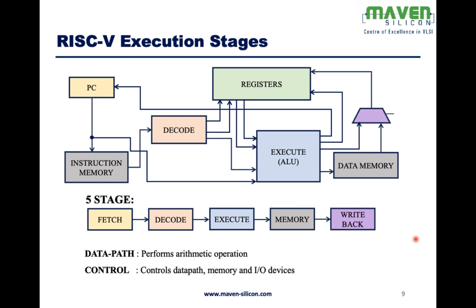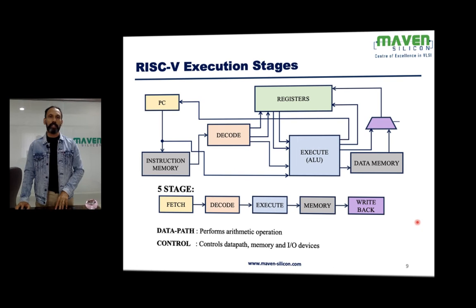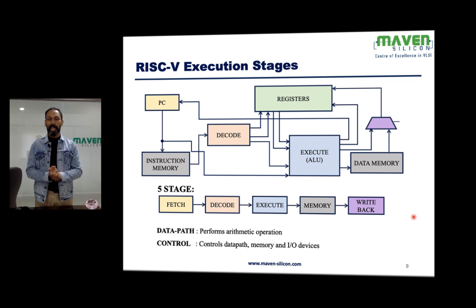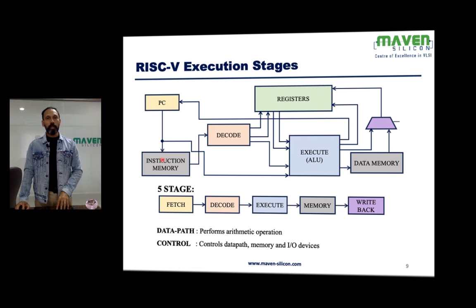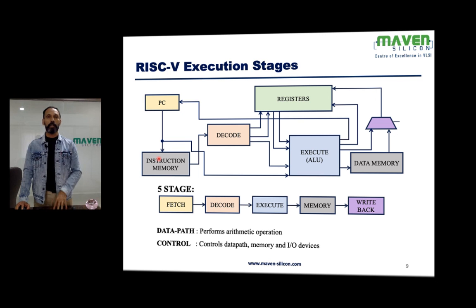How does the RISC-V processor work? It works through five stages: fetch, decode, execute, memory, and write-back. The instruction will be loaded in instruction memory, and the processor reads the instructions sequentially — mostly sequentially, though sometimes it could happen in a non-sequential manner.